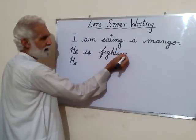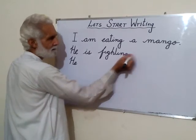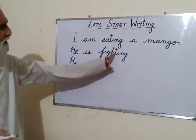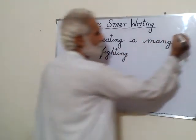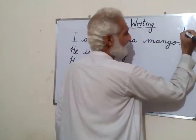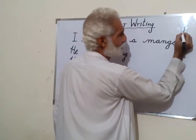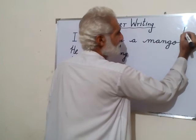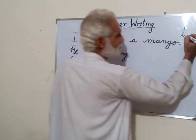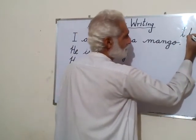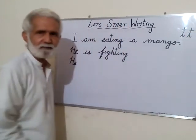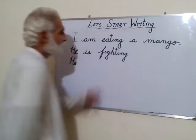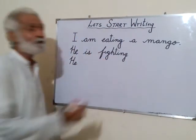Now look at G and T. T always from the top — not from the center. When you write T, remember: don't cut from the center. This is not the place to cut T. What you will do is cut it from the top position. Just from the top, from here, you will cut. This is what T is. So when we say 'fighting,' and 'He is fighting with me.'